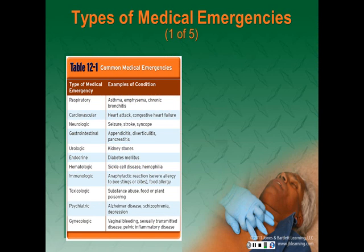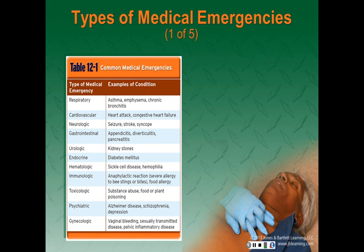Types of Medical Emergencies. The types of medical emergencies we're going to discuss include respiratory emergencies, which occur when patients are having trouble breathing or when the amount of oxygen supplied to the tissues is inadequate. Diseases that can lead to respiratory emergencies include asthma, emphysema, and chronic bronchitis.